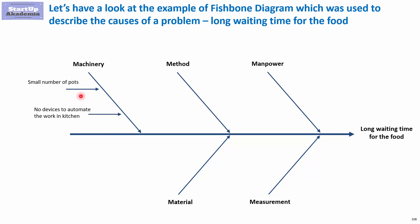One of the root causes could be a lack of pots needed to prepare the food, so people have to wait for new clean pots. We may also have an insufficient number of devices to help automate the work and shorten the time of preparing the food. When it comes to methods, we may be lacking procedures and not having sufficient recipes.